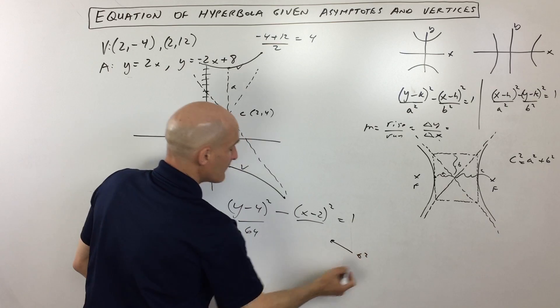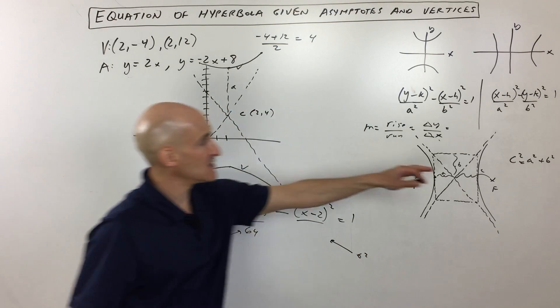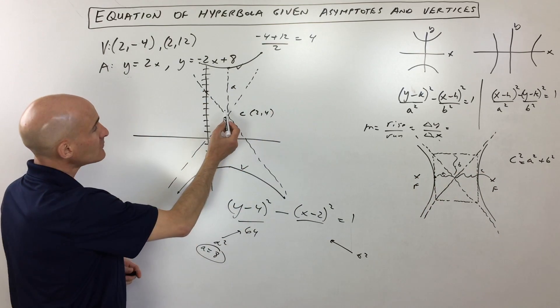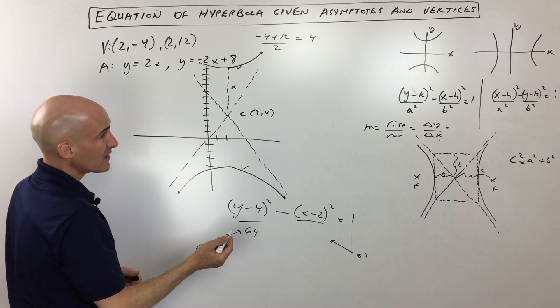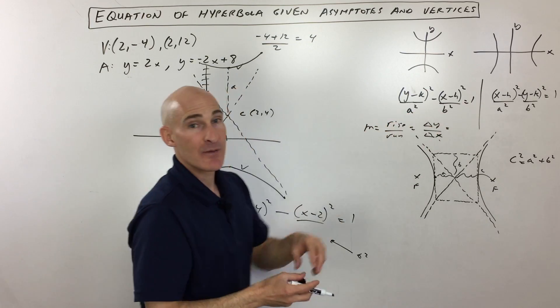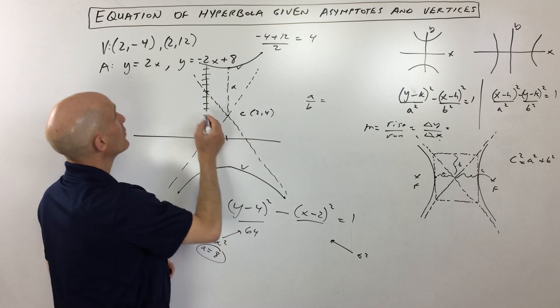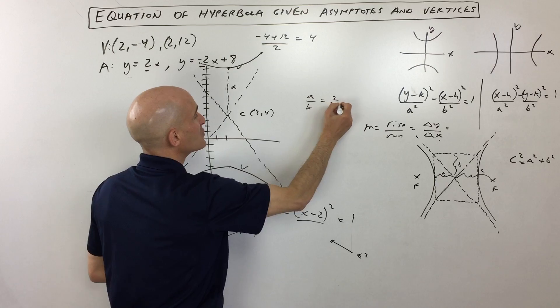Now all we have to do is find our b squared. That's this value right here. And the equation that relates all those together is c squared equals a squared plus b squared. And we also know that the slope of this asymptote here is going to be the rise over the run. So when we think about the rise over the run, we can think about in this case a divided by b is our slope. So let's write that down. So a divided by b is equal to our slope and we know the slope is 2. So that means we're going up 2 over 1.